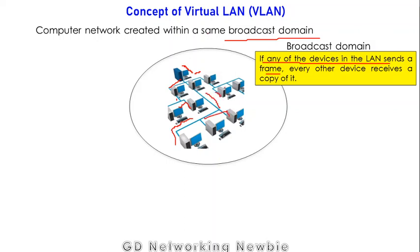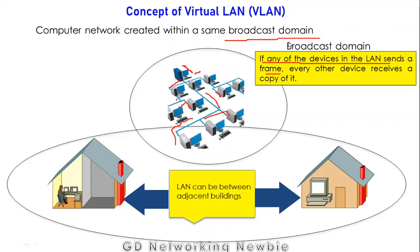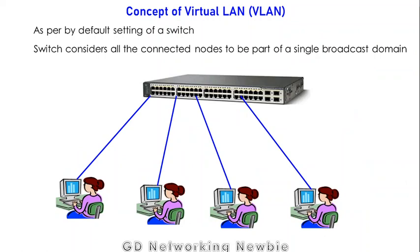If any computer sends a broadcast frame, it should be received by all computer nodes within that network. If this is the case, we say this is a single broadcast domain. So if there is a LAN between adjacent buildings, a broadcast frame sent by any computer in one building should be received by all computers in both buildings — that is a single broadcast domain.